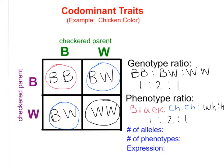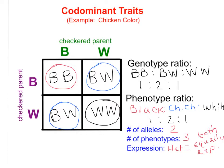How many alleles do we have in this situation? We only have two: black or white. But how many phenotypes do we have? In this situation, we have three different phenotypes — they could be black, white, or checkered chickens. Having three phenotypes indicates that something else is going on besides simple Mendelian genetics. And what is our expression? For the heterozygote, both alleles are equally and fully expressed.